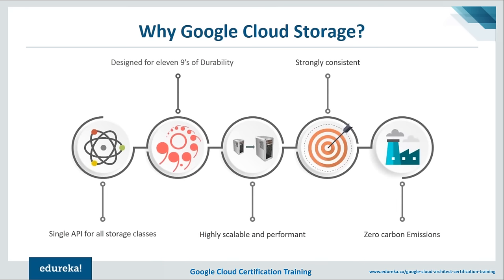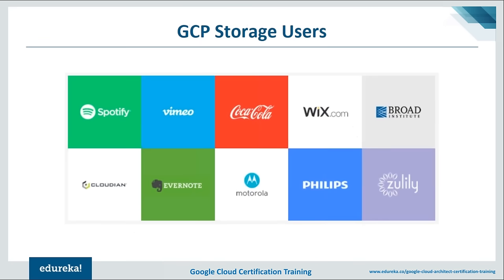Coming to zero carbon emission — there are many things to consider when choosing a cloud platform: price, security, openness, and the products available. Google believes you should also consider the environment. A sustainable cloud is not only good for the environment but also good for your business. By moving storage from a self-managed data center to GCP, the emissions directly associated with the company's data storage will be zero.